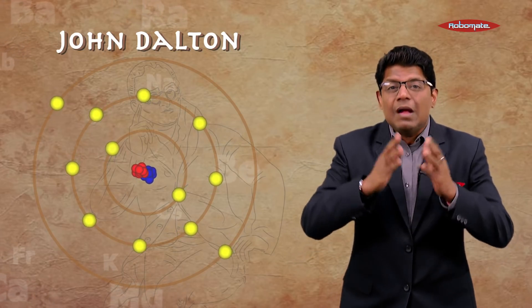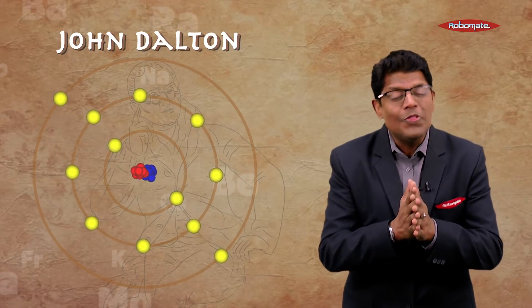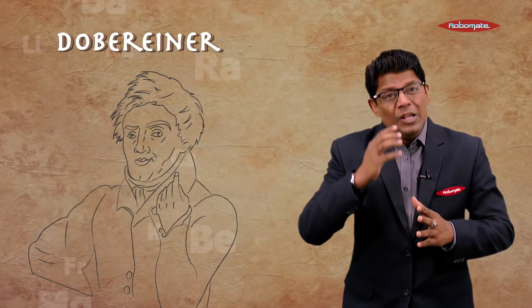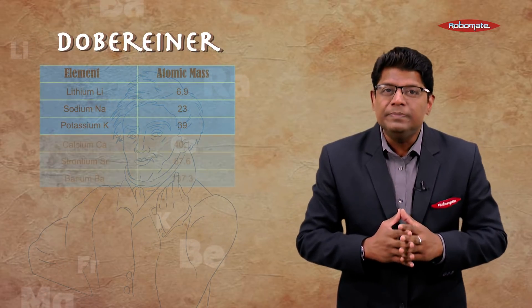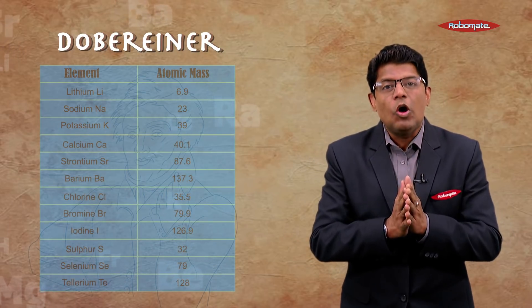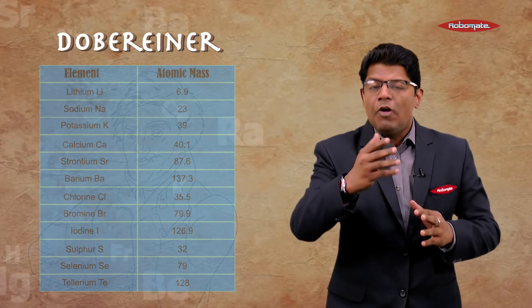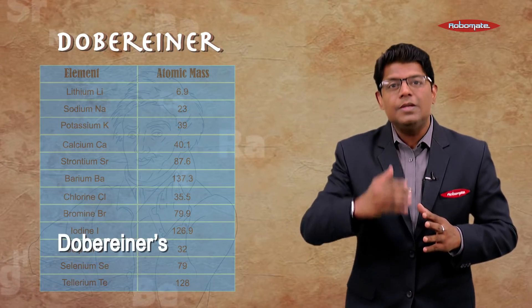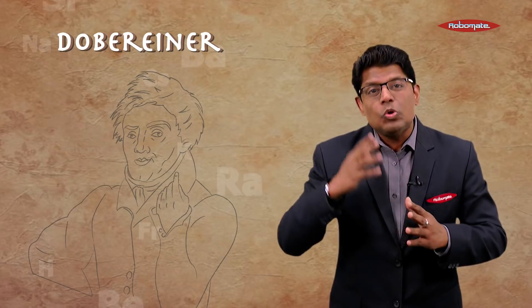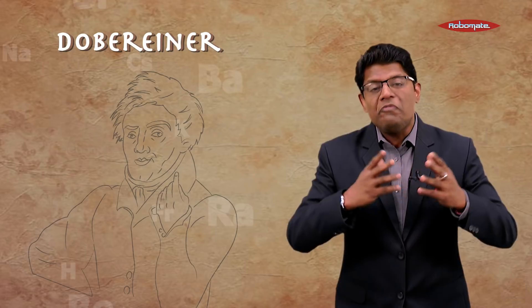Scientists started classifying the elements on the basis of their atomic mass. The first scientist to do so was Döbereiner. During his time, there were nearly 30 elements. He collected all the elements and tried to classify them on the basis of atomic mass, putting forward a law called Döbereiner's Law of Triads. But he could not classify all the elements known at his time in this law, and therefore it failed.